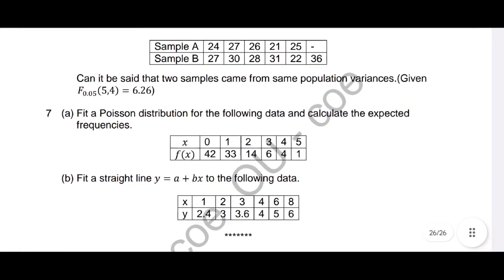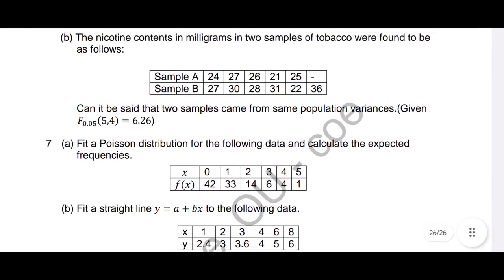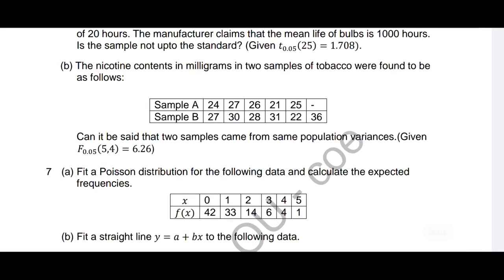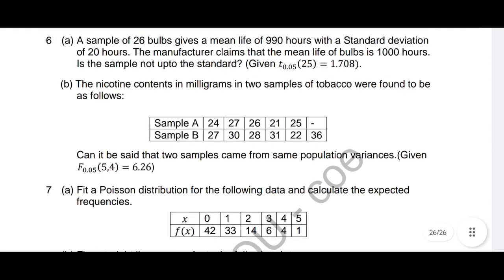This last question paper includes fitting a Poisson distribution and fitting a binomial distribution — both are already in the videos and are very very important. 'Fit a Poisson distribution to the following data' and 'fit a binomial distribution to the following data' are very important questions. There is also a nicotine contents in milligrams problem already explained in the video. Whenever test of variances are given, we have to use the F-test.